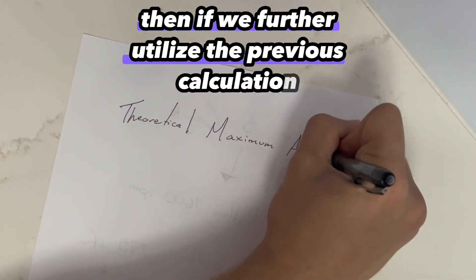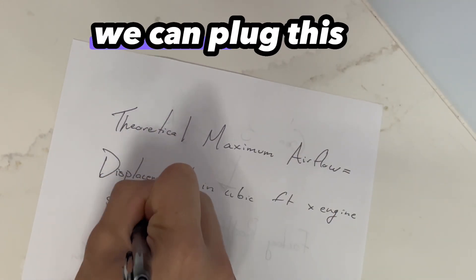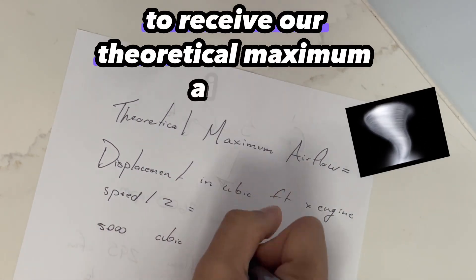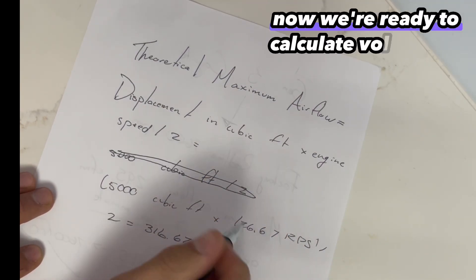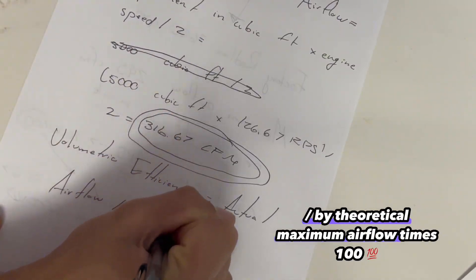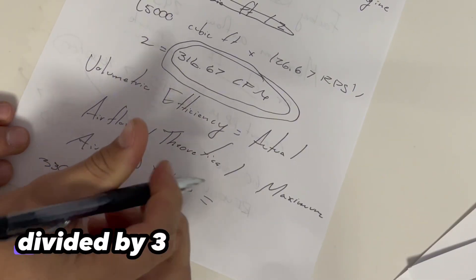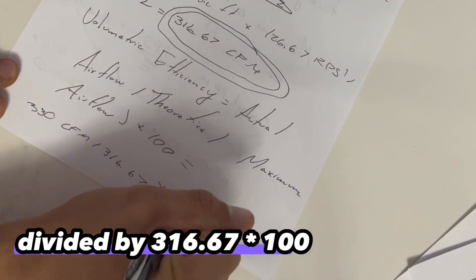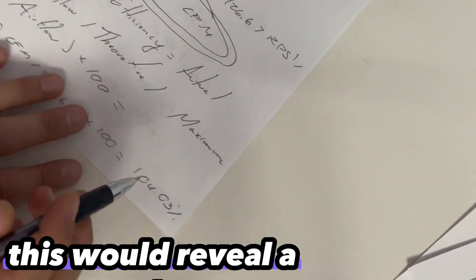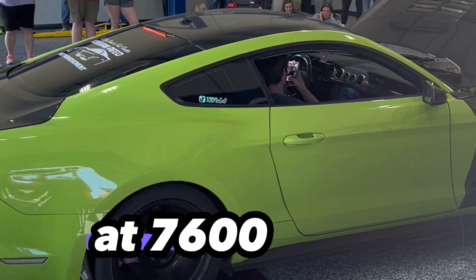Then if we further utilize the previous calculation and the product derived from the calculation, we can plug this in to receive our theoretical maximum airflow. So now we're ready to calculate volumetric efficiency, which is actual airflow divided by theoretical maximum airflow times 100. So this would be 330 CFM divided by 316.67 times 100. This would reveal a value of a volumetric efficiency of 104% at 7,600 RPM.